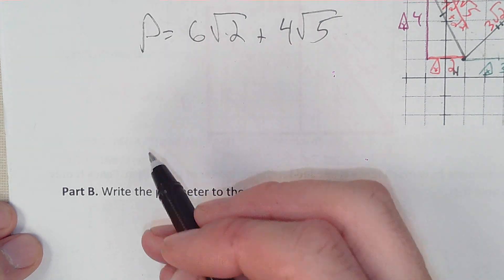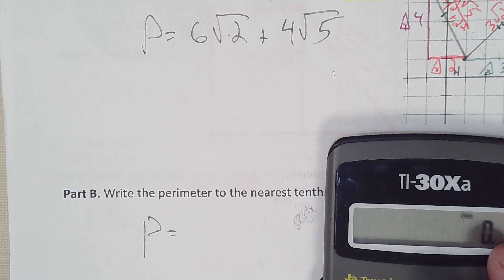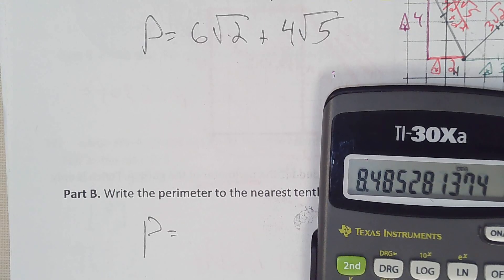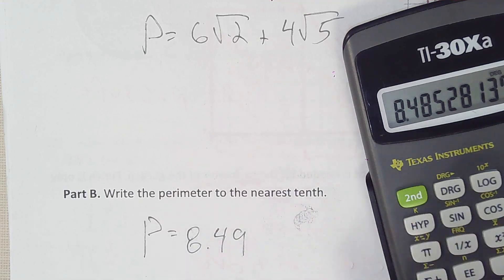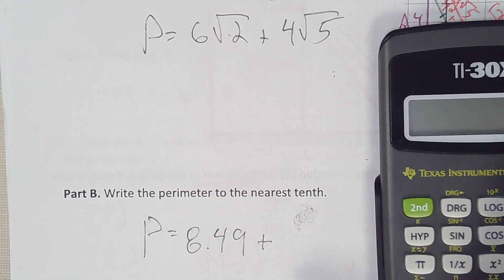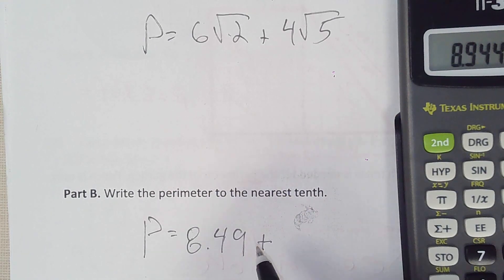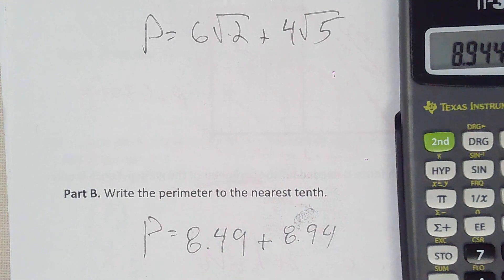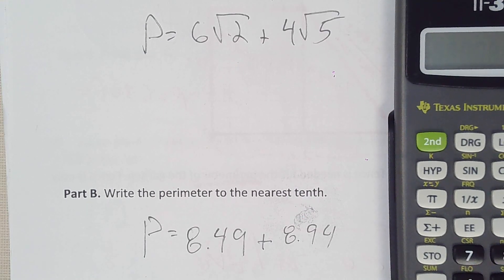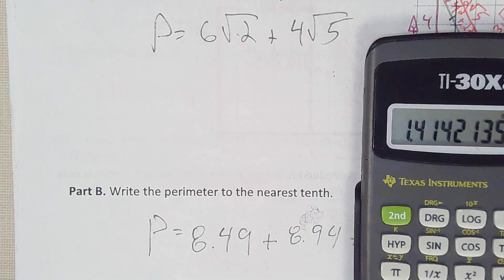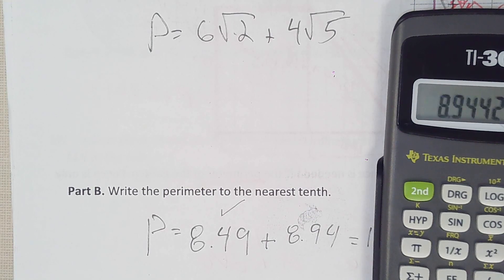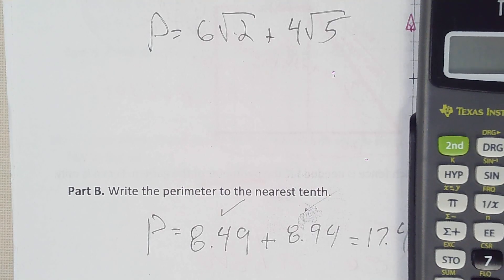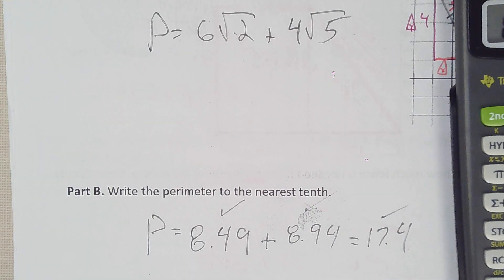For part B, rounding to the nearest tenth: putting this into a calculator, 6 times √2 equals about 8.49. For intermediate calculations I'll round to the hundredth. Then 4 times √5 equals about 8.94. Adding 8.94 plus 8.49 gives approximately 17.4. Let me verify: 2×√2 times 3 — check — and 5×√4 times 4 — check — plus 8.49 — check. That is correct.